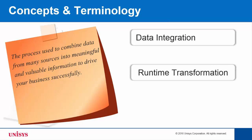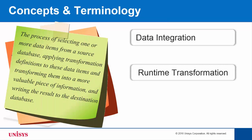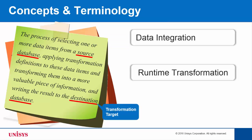Runtime transformation is the process of selecting one or more data, such as tables or columns from a source database, known as the transformation source, and then applying transformation definitions to these data, transforming them into a more valuable piece of information, and writing the result to the destination database, known as the transformation target.